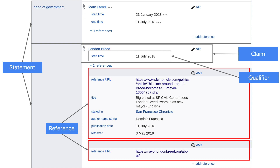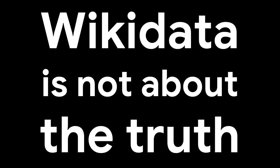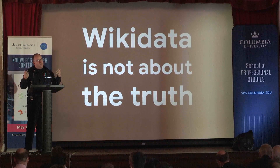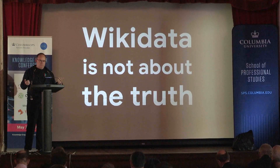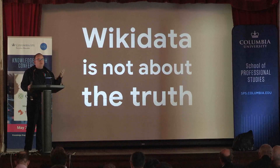The next thing is that we have references for every single claim. A statement consists of claims and references. The references are super important because Wikidata is not about the truth. It's just like Wikipedia — it doesn't represent the truth. It presents what the sources outside are saying about the different items. So we don't try to figure out what is the capital of Israel for real. We don't try to figure out to whom does Crimea belong for real. It's all about what sources say about this and which sources say it. And you can then use the knowledge, filter by it, and decide for yourself which sources you actually want to trust.